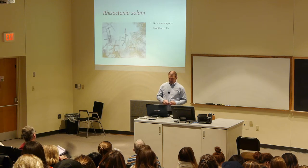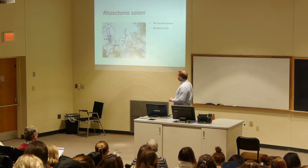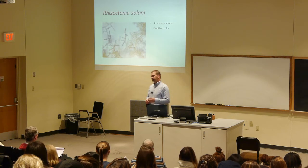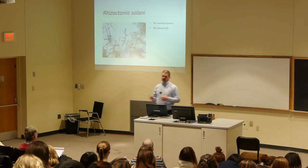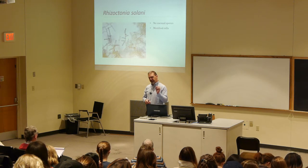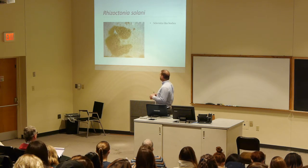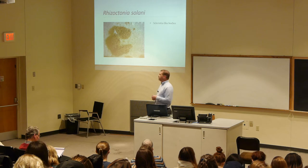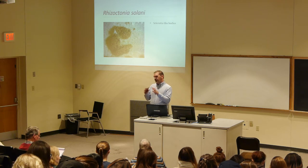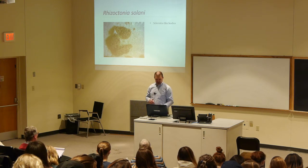Rhizoctonia produces no asexual spores, but it does produce monilioid cells that look very spore-like, except they don't pinch off — probably a function this group has lost over evolutionary time. These monilioid cells form tight masses called sclerotia-like bodies, or not true sclerotia. True sclerotia have an outer rind and an inner medulla; these just have more of the medulla part without the outer rind.